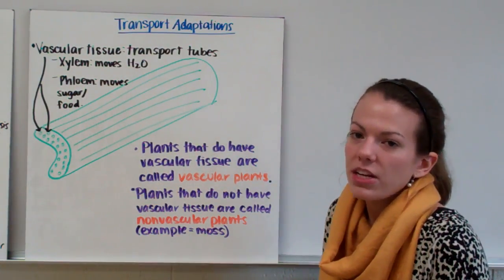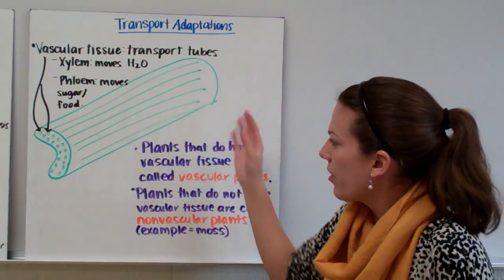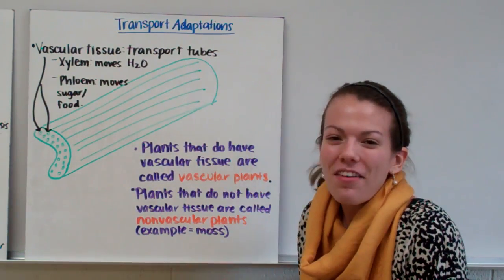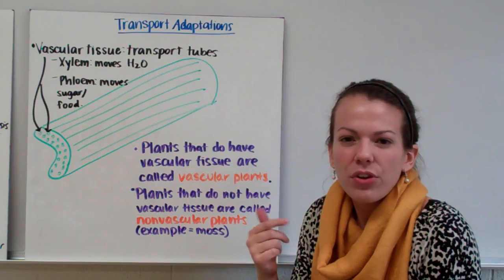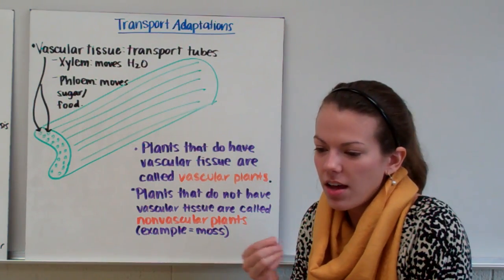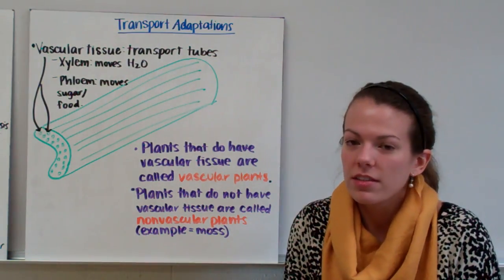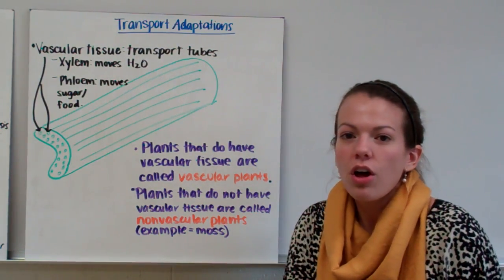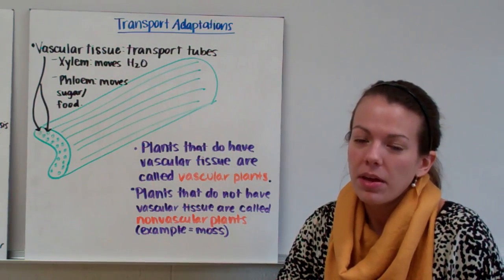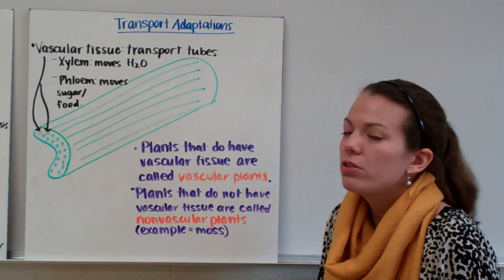Let's look at some transport adaptations. This is a piece of celery. If you've ever eaten celery, you'll notice sometimes you get the little stringy material stuck in your teeth. Now that stringy material is present in most plants. Lots of plants have long tubes that travel up and down the plant through the stem that are used to transport things.